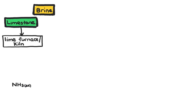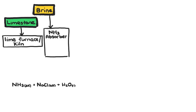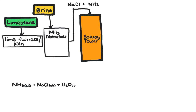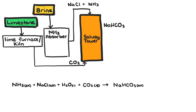Ammonia is also dissolved into the brine in an ammonia absorber. This ammoniated brine solution passes down through a series of baffles in a tall Solvay tower, where carbon dioxide gas is bubbled up through the solution. The CO2 dissolves and reacts to form a solution of sodium hydrogen carbonate and ammonium chloride.